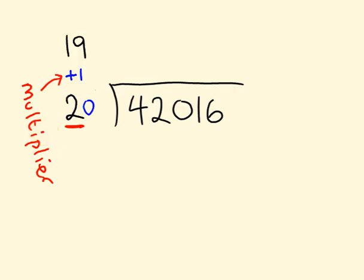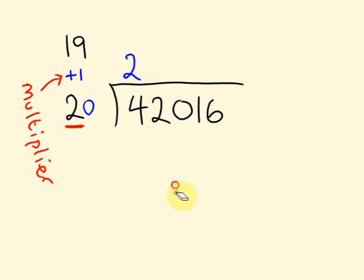This is a bit of a weird type of division because the actual answer we're getting helps get further parts of the answer. First off, we start here with normal division: 4 divided by 2. What's 4 divided by 2? That's 2. There's no remainder — nice and easy.